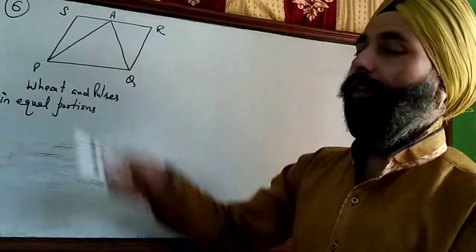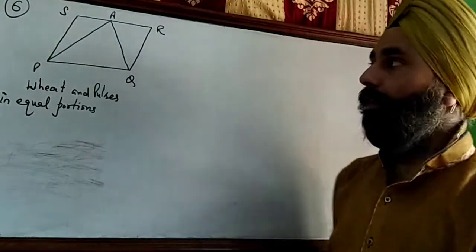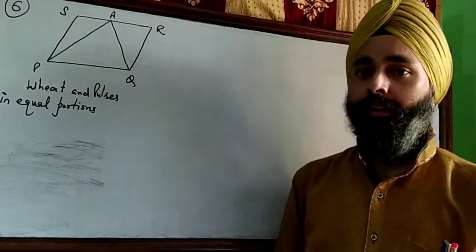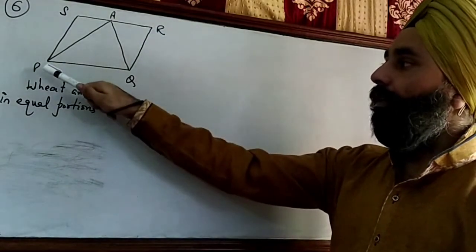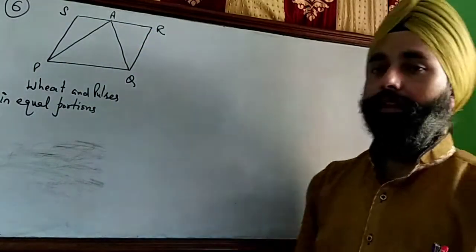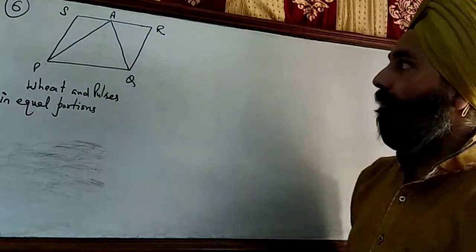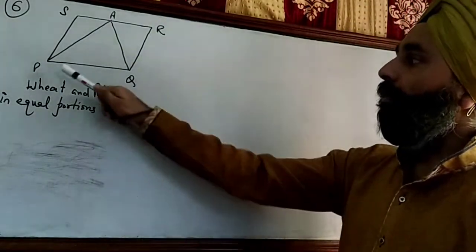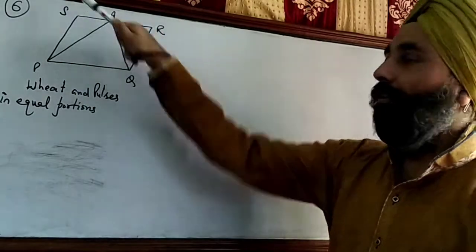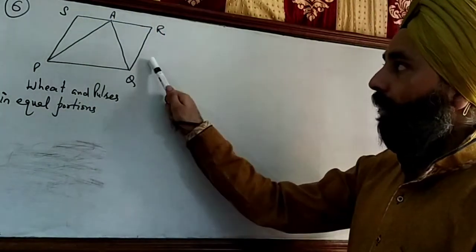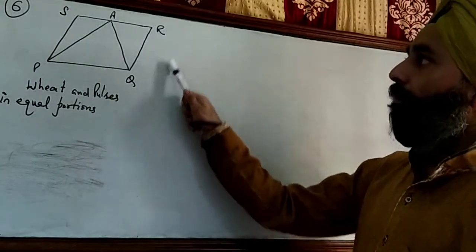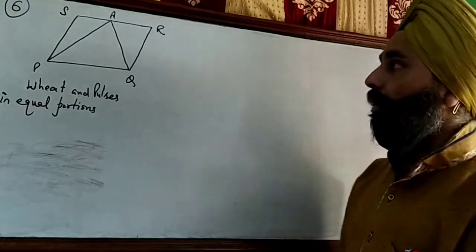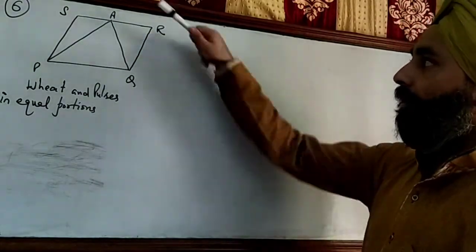This is question number six of exercise 9.2. The chapter is areas of parallelograms and triangles. The question is: A farmer is having a field PQRS in the shape of a parallelogram. This is PQRS, a parallelogram-shaped field.